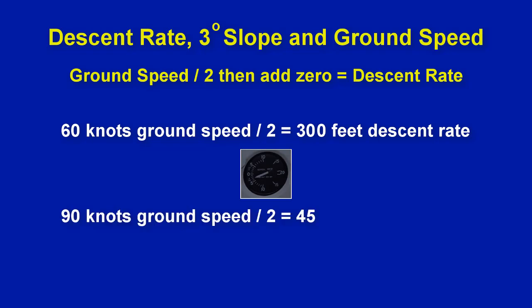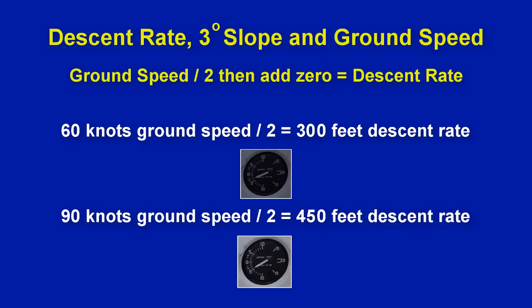One more example: if your ground speed is 90 knots, then 90 divided by 2 is 45, so adding a zero makes that a 450 feet per minute descent rate. Keep in mind that you will change ground speeds as you get close to the runway, so your descent rate will need to change as well.